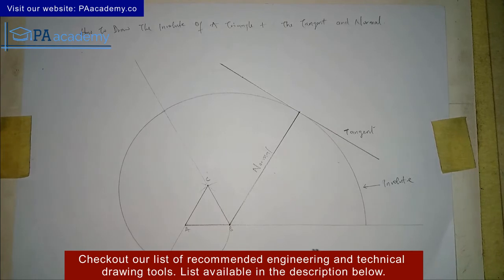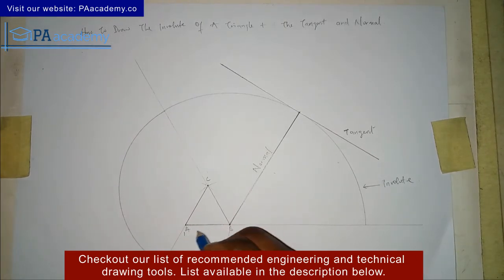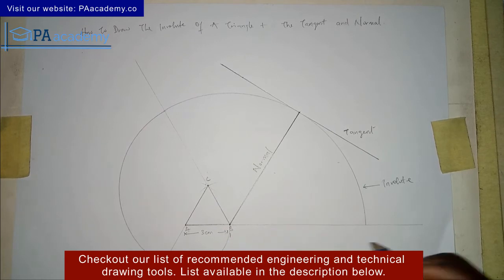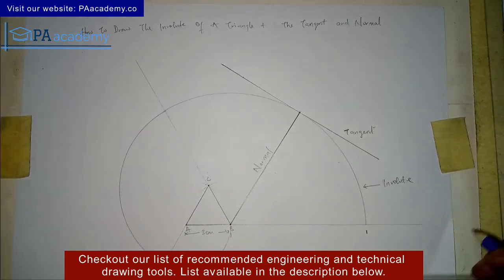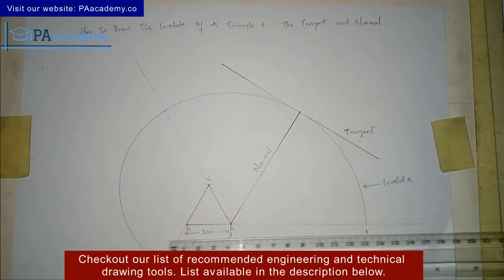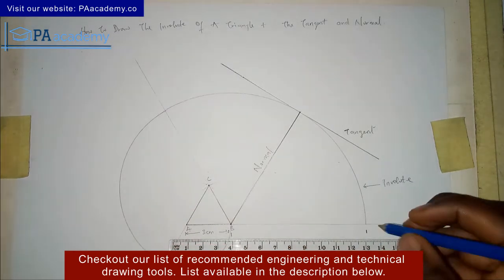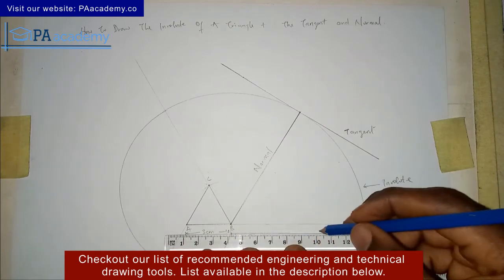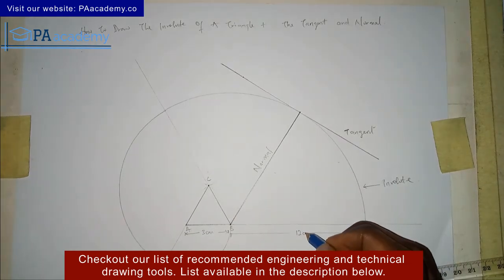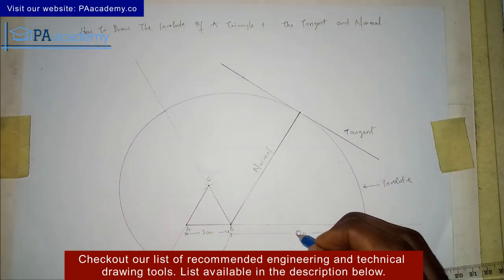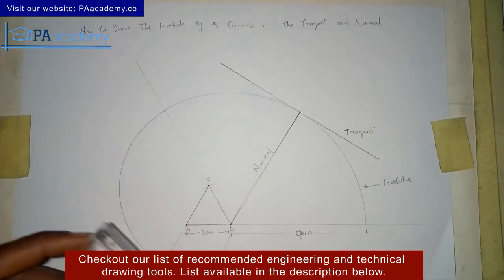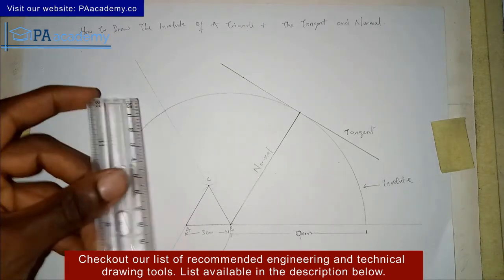Let's do some dimensioning. From A to B is 3 cm. From point B to the endpoint of the involute is 9 cm. This gives a total of 12 cm from A to the end. You can also indicate the intermediate dimension: from here to here is 6 cm, and from here to the end is 9 cm.